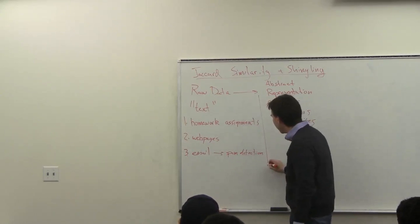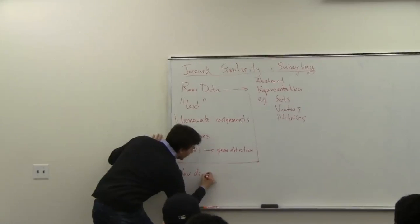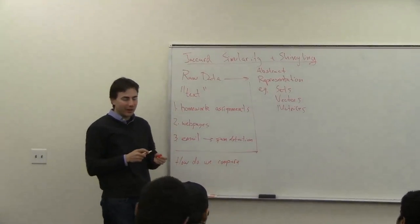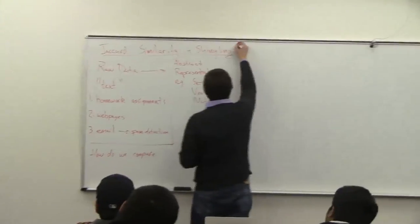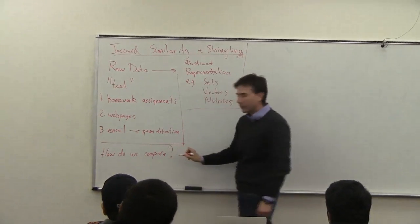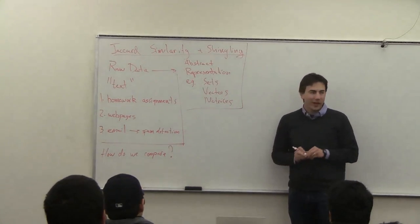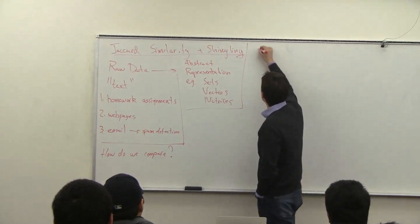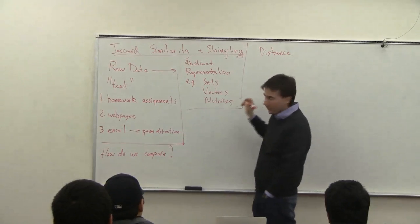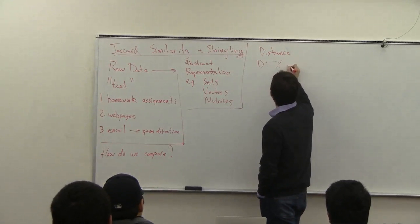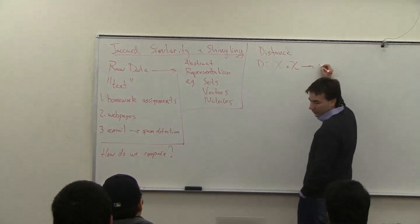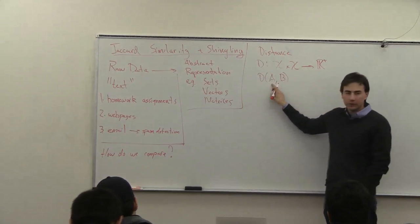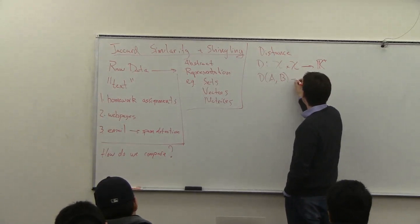The question we want to ask is: given two email messages, how do we say how similar they are? First, let's get the fundamentals straight. A distance is a function D that takes two objects — say two documents A and B — and outputs some number. The distance will be in the range from zero to infinity.